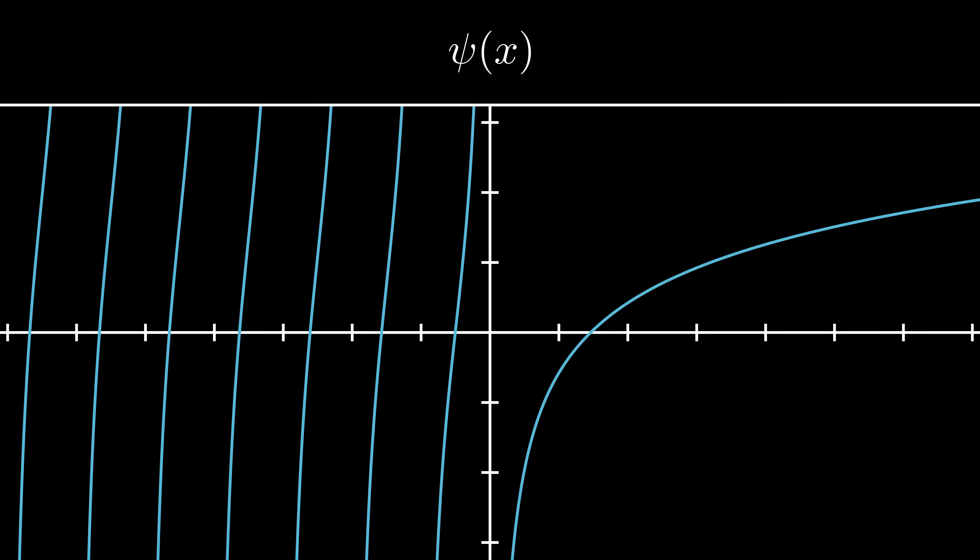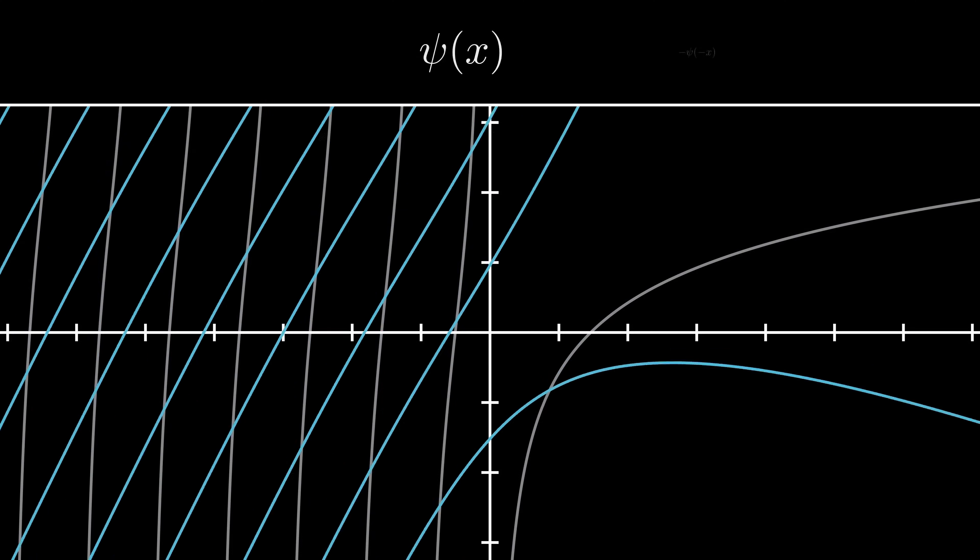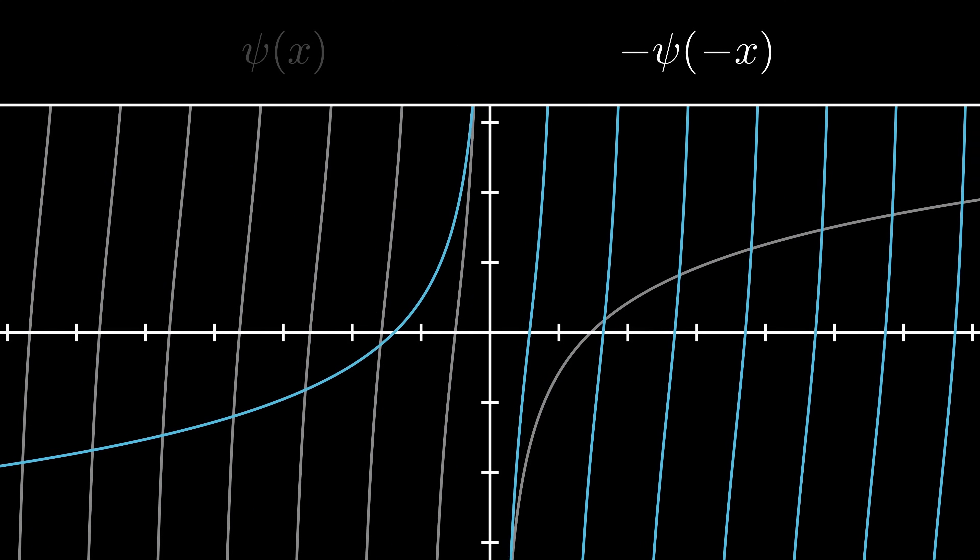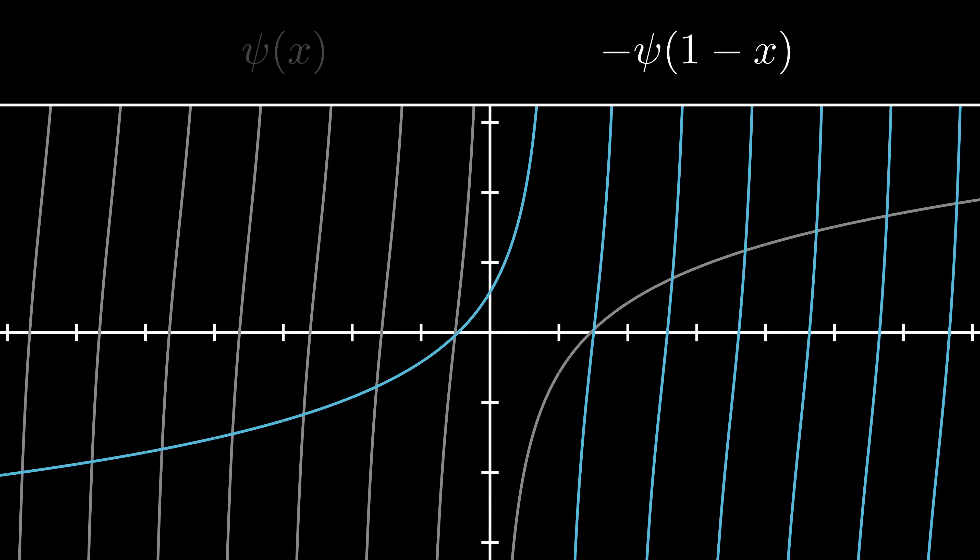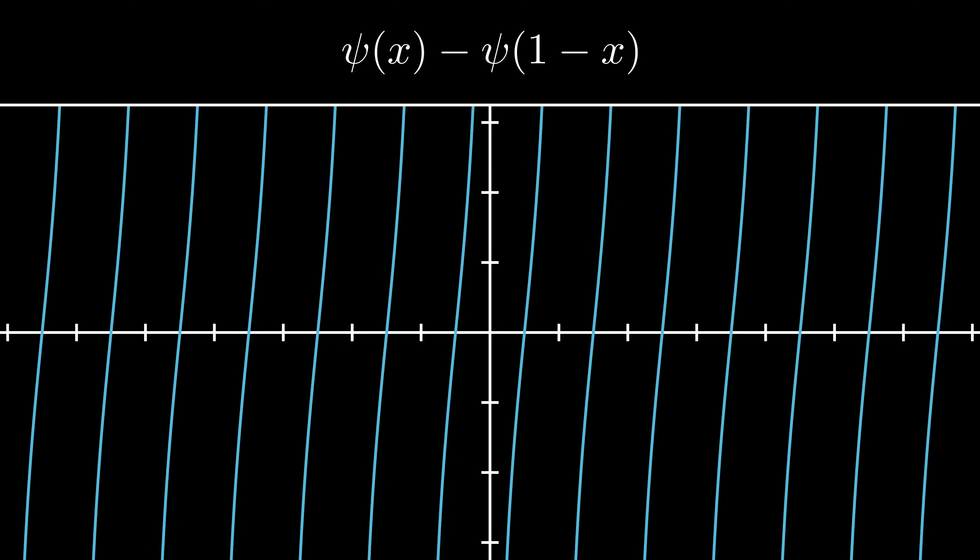The most obvious way that the two functions differ is that tangent repeats in both directions, while digamma only has asymptotes going to the left. So let's fix that. We'll make a copy of the digamma function and flip it upside down, and then shift it one unit to the right. The formula for this upside down copy is now negative psi of 1 minus x. Now, the original has asymptotes at every non-positive integer, and the copy has asymptotes at every positive integer. So if we add the two together, we get a function with asymptotes at every integer.